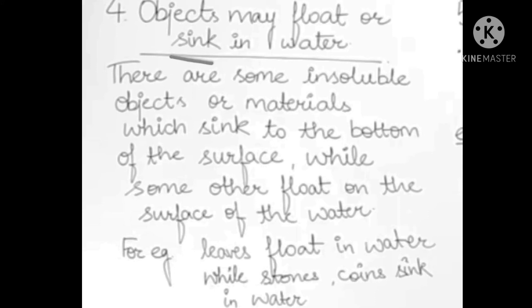Now we move to the next topic: Float and Sink. Float means tairna (to float on the surface). Sink means doobna (to go to the bottom). There are some insoluble substances or materials which sink to the bottom, while some others float on the surface of water.